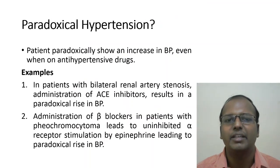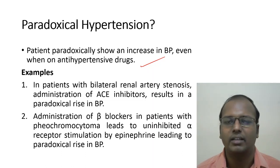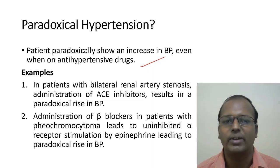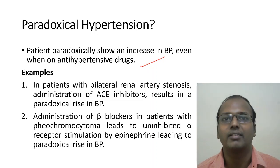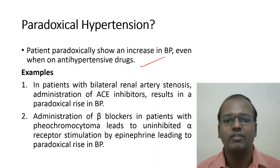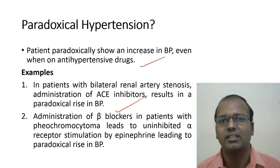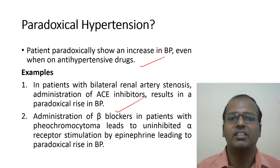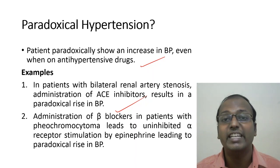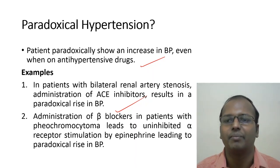Paradoxical hypertension: blood pressure paradoxically increases despite antihypertensive drugs. Examples include: a diabetic on a beta-blocker developing hypoglycemia causing BP to shoot up; bilateral renal artery stenosis in a patient on ACE inhibitors causing paradoxical BP rise (unilateral renal artery stenosis is an indication for ACE inhibitors, but bilateral stenosis is a contraindication); and administering a beta-blocker in pheochromocytoma — causing uninhibited alpha receptor stimulation and paradoxical BP rise. The correct first drug in pheochromocytoma is phenoxybenzamine (alpha-blocker), followed by beta-blocker for rate control.